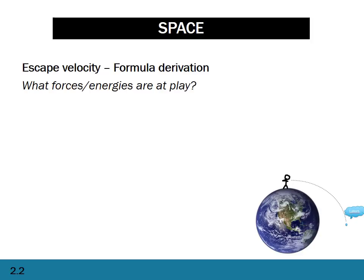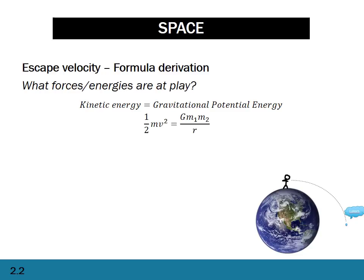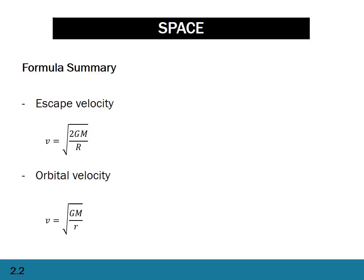Now let's look at escape velocity. This time we have to look at energy rather than forces. We equate the kinetic energy of the ball with the gravitational potential energy of the ball. Setting those two values equal to each other gives us the escape velocity formula. Note that r here is the radius of the earth or a particular planet that the ball is escaping from. You either need to memorize these two formulas or be able to derive them.